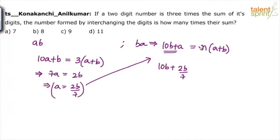How many times? N times. So 10B plus A equals to N times of A plus B. So we can say 10B plus A is 2B by 7 equals to N times of, this again is 2B by 7 plus B.